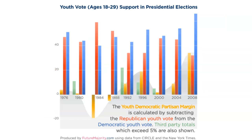Looking at the youth vote — ages 18 to 29 voting in presidential elections — we can see the Republican youth vote, Democratic youth vote, and third-party voting over time. There are some exceptions: the youth voted for Reagan and George Herbert Walker Bush in 1988. Otherwise, they have generally supported Democrats, with close margins in 2000 and even 1980. The youth vote tends to be more supportive of Democrats than Republicans, with a few outliers. Third parties generally don't get the youth vote, though we saw a little in 1992 with Ross Perot running as a Reform Party candidate.